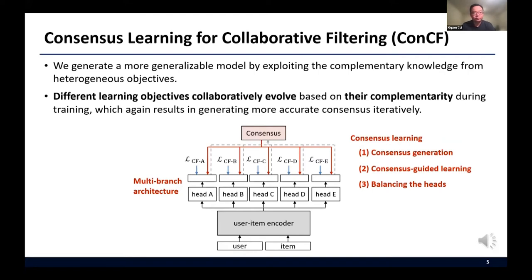This consensus learning process consists of three steps here: consensus generation, consensus guided learning, and balancing the heads. From now, I will explain the key concepts of each step.